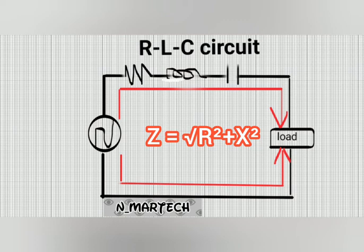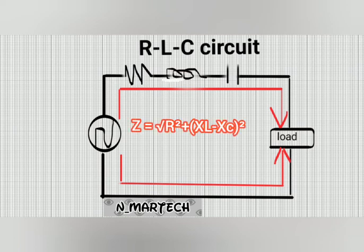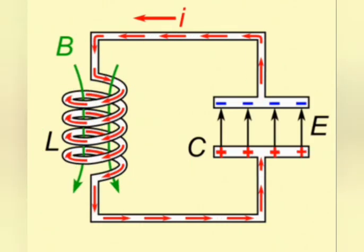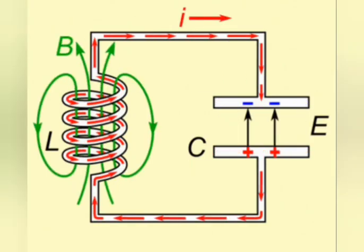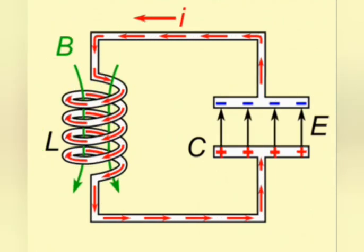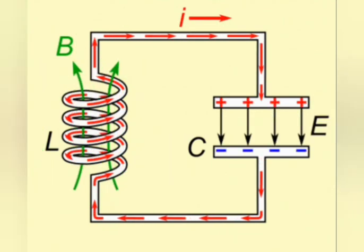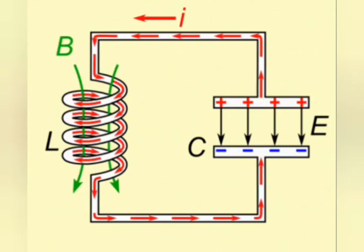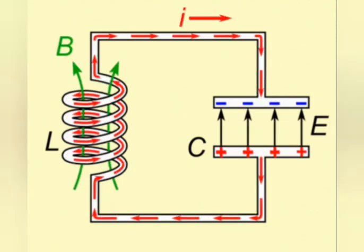Impedance is given by the formula: Z = √(R² + X²). When both XC and XL are given, Z = √(R² + (XL − XC)²).